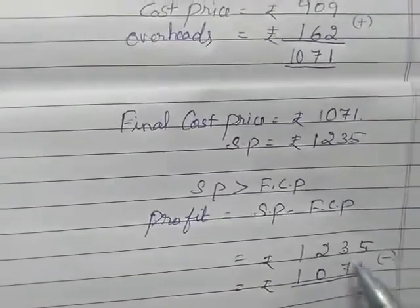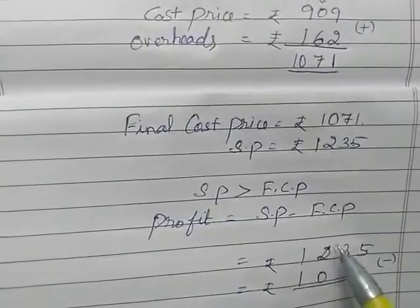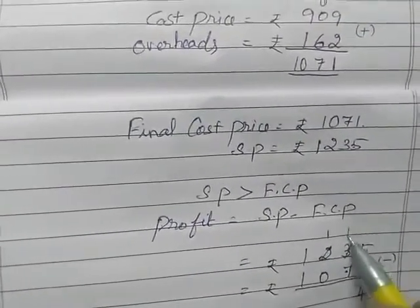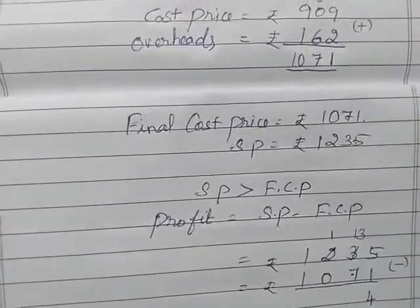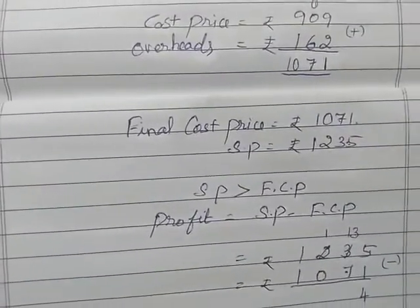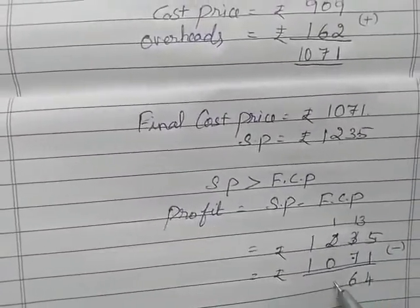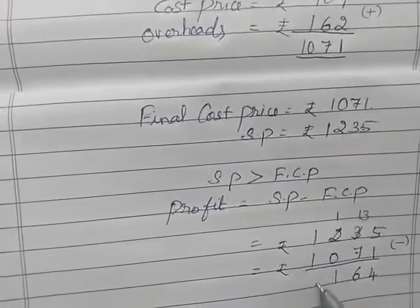3 minus 7. So we can borrow from before number. So 2 convert to 1. The 3 convert to 13. So 13 minus 7. What is the answer? It is 6. So the 1 you just bring down. 1 minus 1 that is 0.